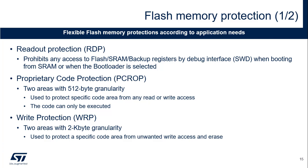Readout protection aims to protect the contents of the flash memory, option bytes, internal SRAM and backup registers against reads requested by debuggers, or software reads caused by programs executed after a boot from SRAM or bootloader. Only a boot from flash memory is permitted to read the contents of these memories. The proprietary code protection is a way to mark parts of the flash memory as execute only. Note that this kind of access permission is not supported by the memory protection unit present in the Cortex-M0+. The user can declare two PCROP areas aligned on 512-byte addresses. PCROP areas are useful when only a part of the flash memory has to be protected against third-party reads. Write protection prevents part of the flash memory from being erased and reprogrammed.